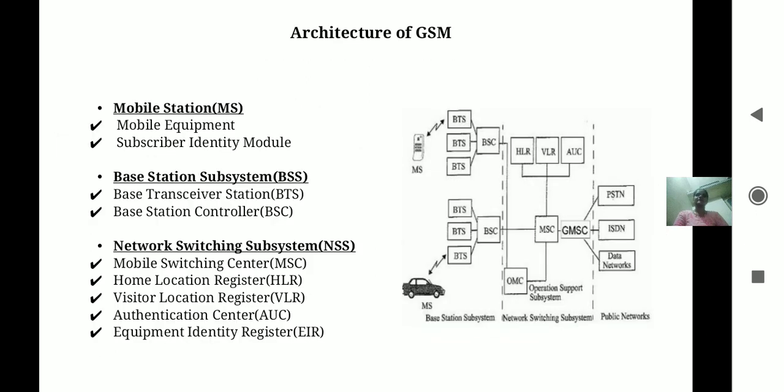Let's see the architecture of GSM. The architecture of GSM is broadly divided into three parts: mobile station, base station subsystem, and network switching subsystem.